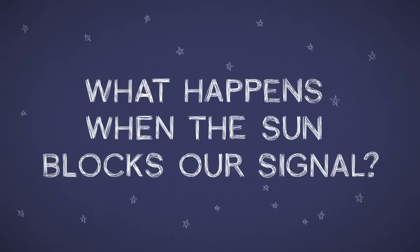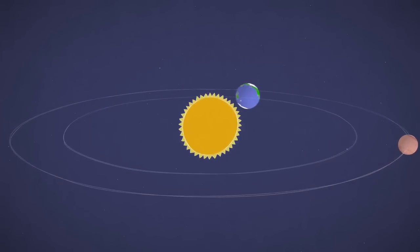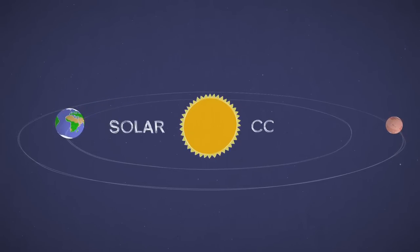What happens when the Sun blocks our signal? About every two years, Earth and Mars wind up on opposite sides of the Sun. That's called solar conjunction.